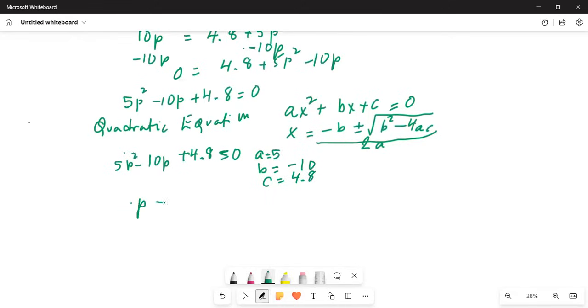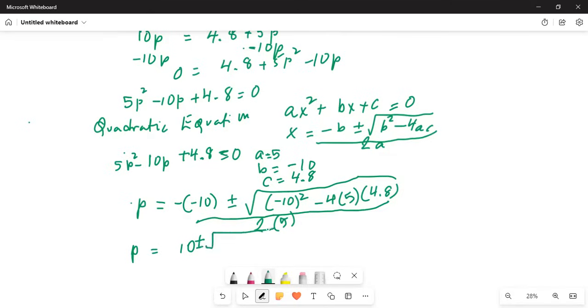My p, which is the probability of success in each trial, is minus b, so it's minus 10 plus minus inside the square root minus 10 square minus 4 times a, which is 5, and c is 4.8, divided by 2 times 5. So p is equal to 10 plus minus 100 minus 96 divided by 10.